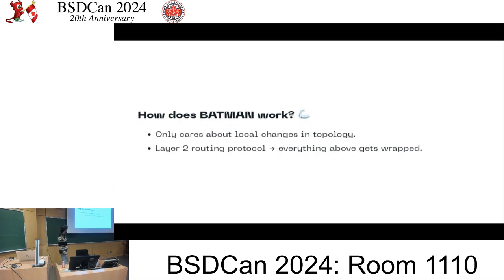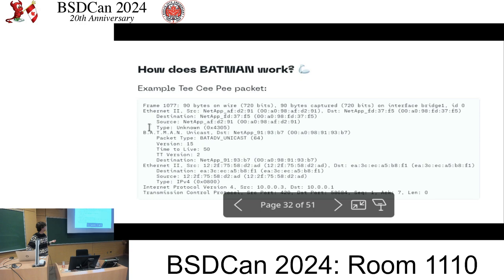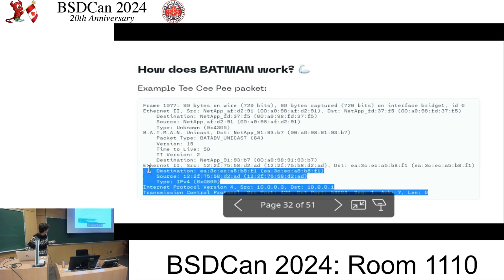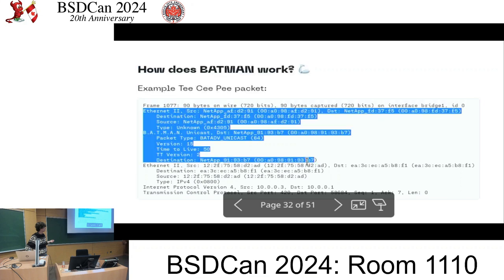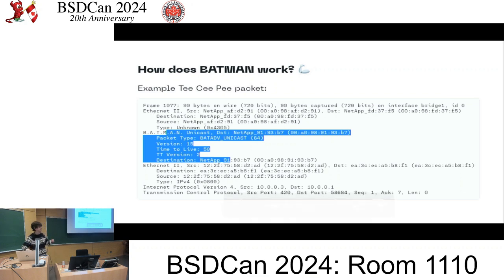How does Batman work? For each node, Batman only cares about local changes in topology. Whereas OLSR has each node know about the whole network, Batman is much more restricted in what it knows, making it more performant. It's a layer two routing protocol, meaning everything above layer two gets wrapped in a Batman packet. In a TCP packet example, you have a Batman header plus another Ethernet header wrapping your whole packet, and Batman's magic handles all the routing.